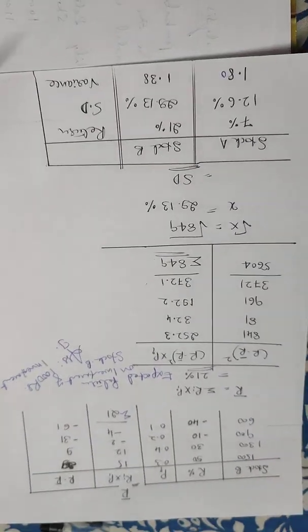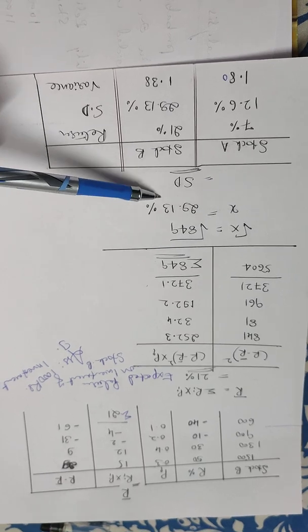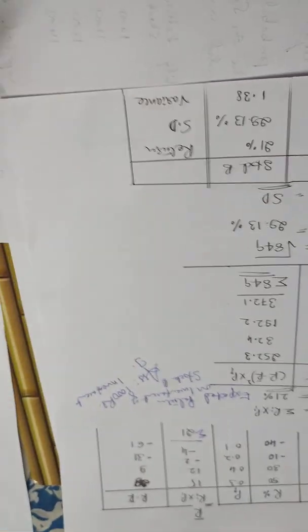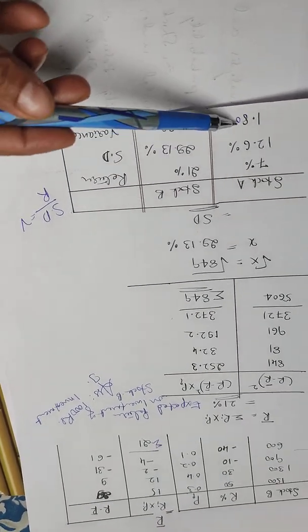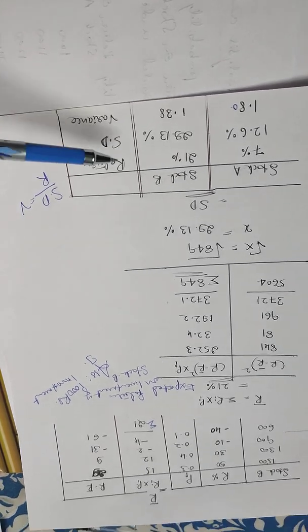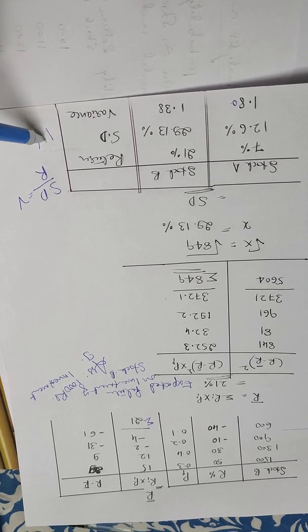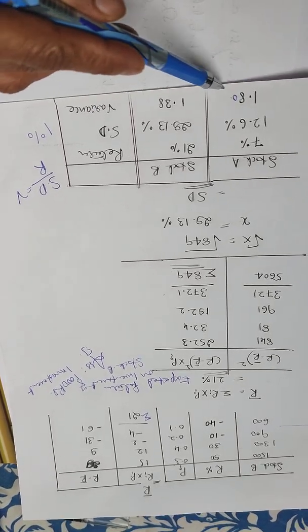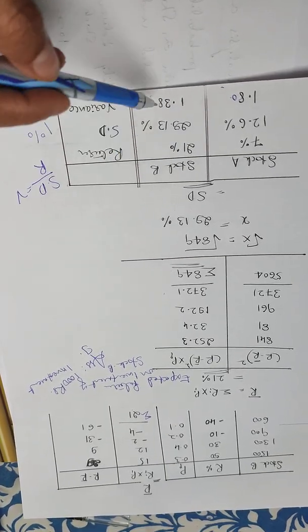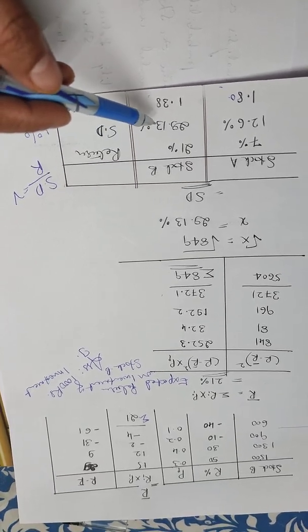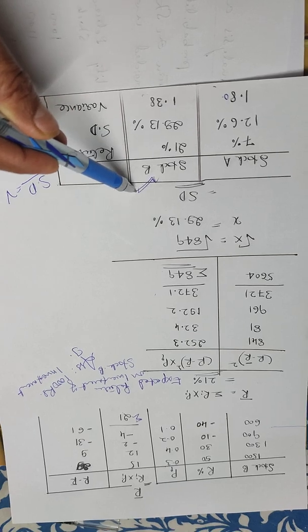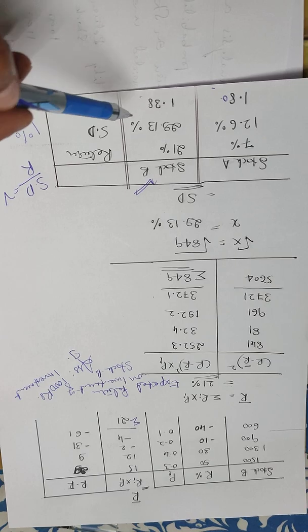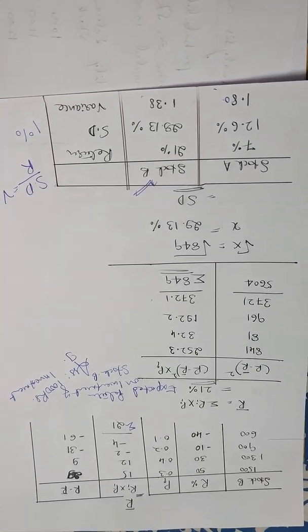So stock B has an expected return of 21% and risk of 29.13%. The variance is standard deviation divided by return. Stock A has a risk-return ratio of approximately 1.38, while stock B has a higher return but also higher risk of 1.8. If you choose stock B, return is high but risk is also high.